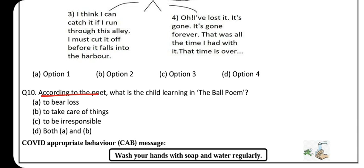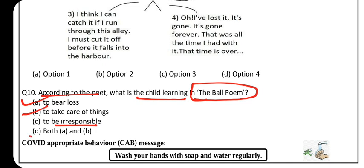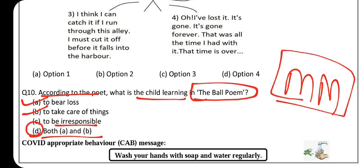Question 10 — the last question: According to John Berryman, what is the child learning in 'The Ball Poem'? The theme is: to bear loss as it is, and to take care of things. Options A and B are both correct — the child is not learning to be irresponsible. Option D — both A and B — is correct. This completes our worksheet. If you found this video helpful and want more videos on assessment worksheets, comment below, hit like, subscribe, hit the notification bell, share with friends, and keep watching and supporting our channel Molding Minds. Jai Hind, Jai Bharat!